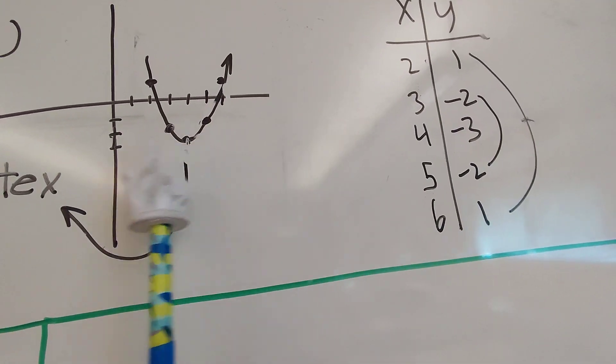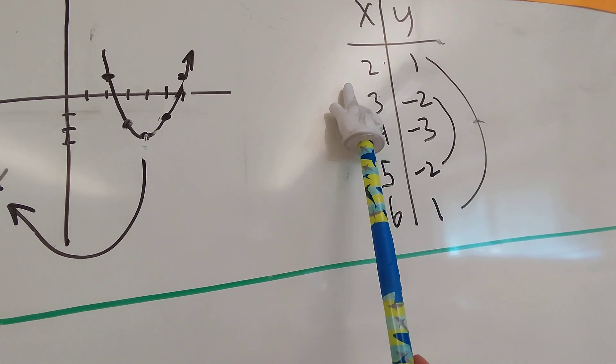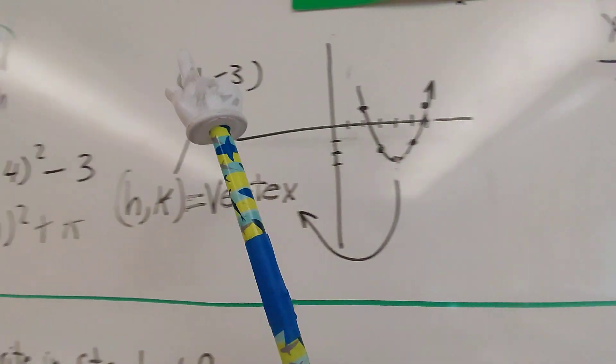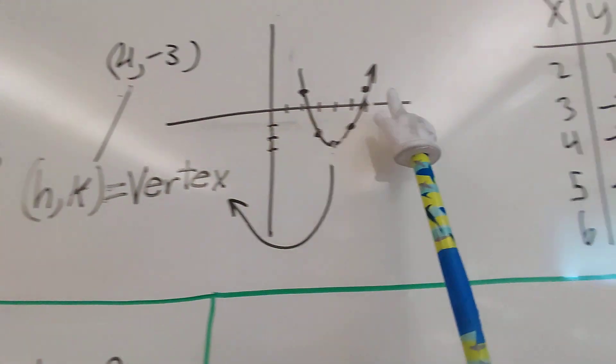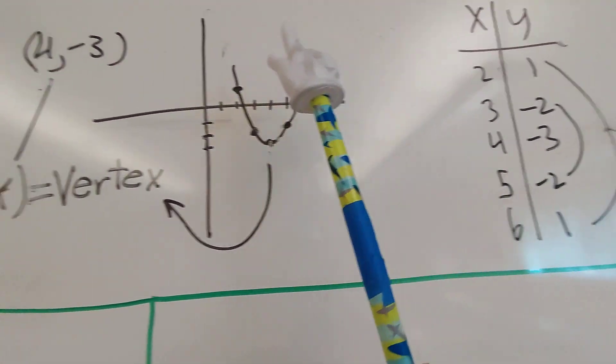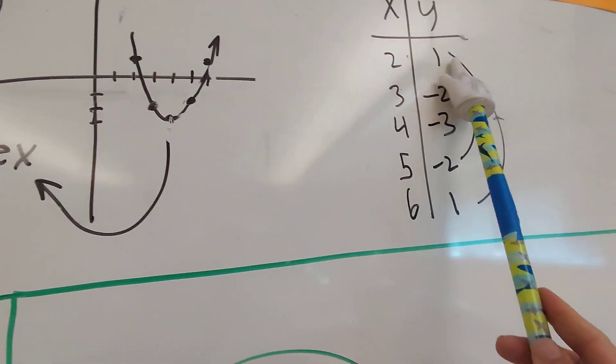Do two numbers to the left of the vertex. From 4, go to 3 and 2. Plug in x equals 3. Solve it. You should get this value. Plug in 2. Solve it. You should get that value.